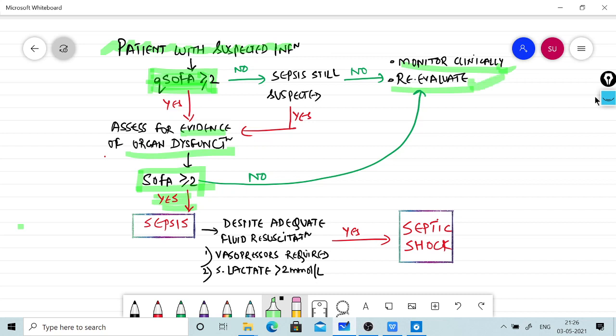When the diagnosis of sepsis is made and additionally there is hypotension despite adequate fluid resuscitation requiring vasopressors, or serum lactate is more than 2 millimoles per liter, then it will be a diagnosis of septic shock. This is a short and sweet algorithm for diagnosis of sepsis.